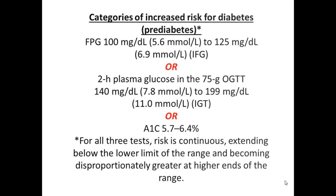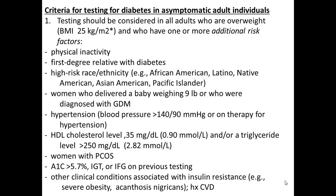There's a long list of people who need to be tested and screened for diabetes. It should be considered in all adults who are overweight, inactive, have a family history of diabetes, or are part of a high-risk ethnic group. Women who've had a child weighing more than nine pounds or who were diagnosed with diabetes during pregnancy should also be screened, as gestational diabetes makes both the mother and infant more likely to develop diabetes later in life. Hypertensive patients, those with high cholesterol or hypertriglyceridemia, women with polycystic ovarian syndrome, and those with insulin resistance conditions such as severe obesity, acanthosis, or a history of heart disease are also on this list.